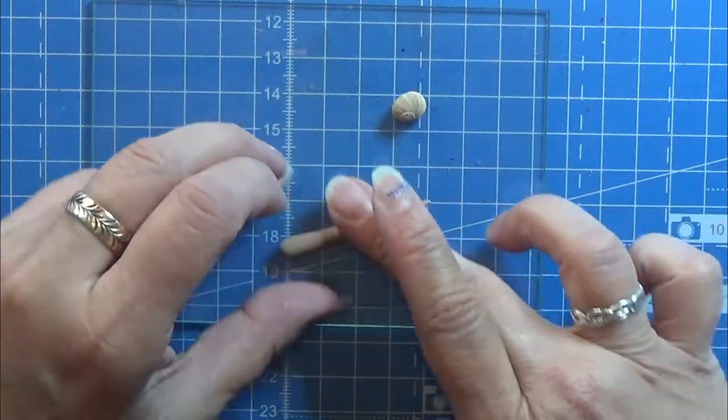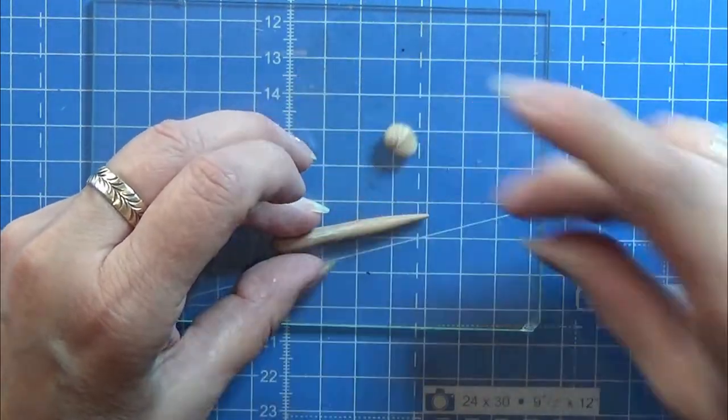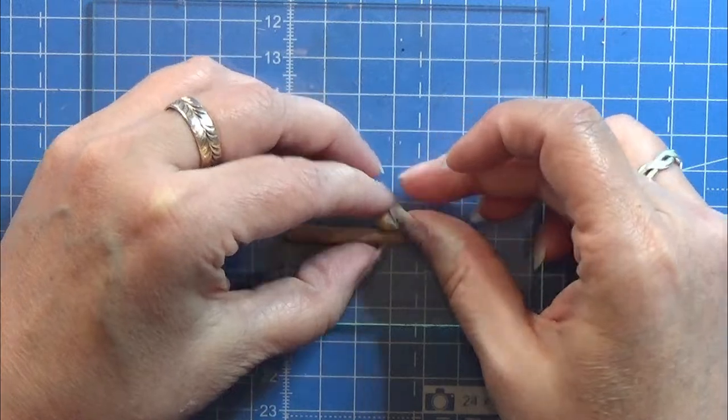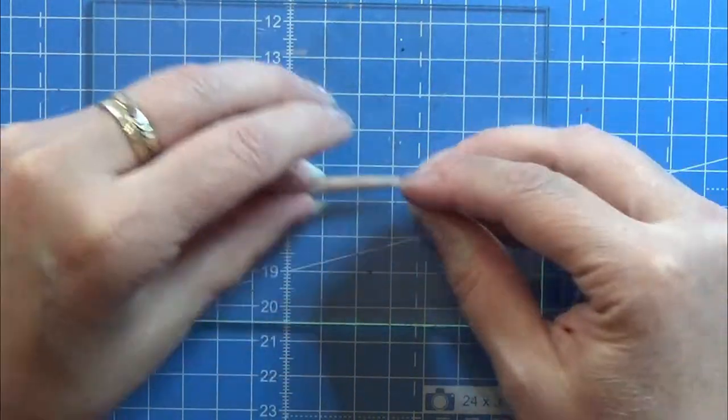And then I am rolling it into a snake with a pointy tail for the snake itself. Oh no, not the snake, the snail of course.